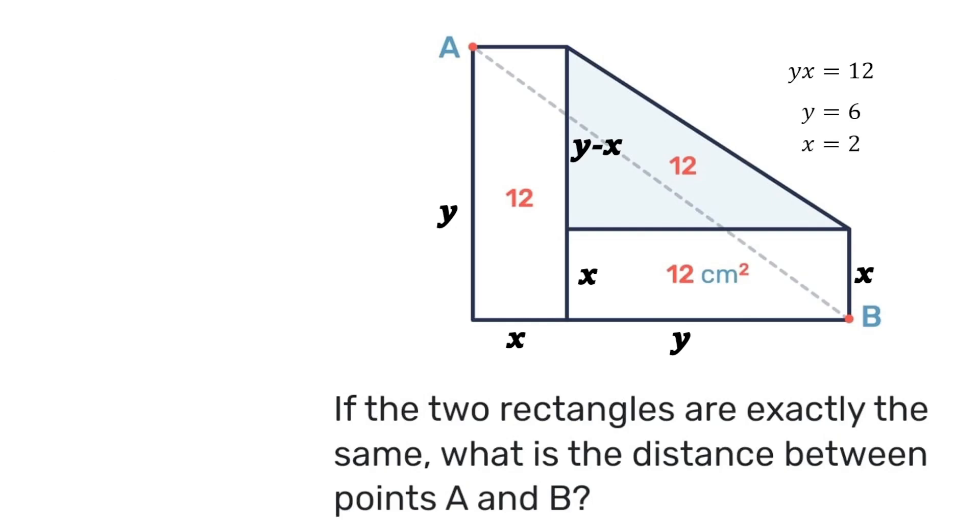So we know that we have to find the distance AB but when we look at our diagram that is a right angle triangle. Therefore we can use Pythagorean theorem where the height of the triangle is y and the base is x plus y.